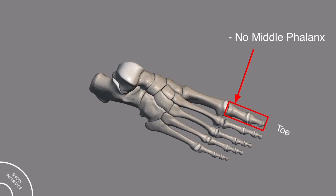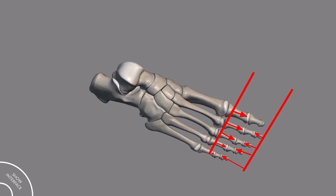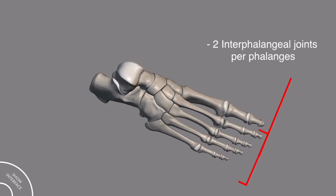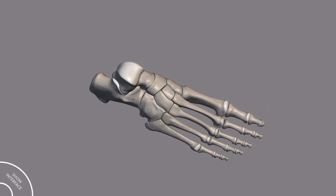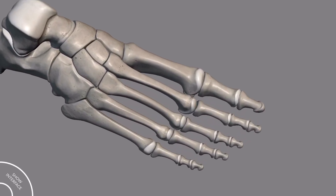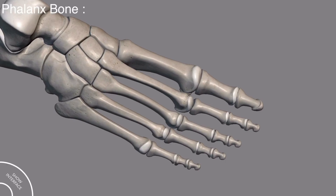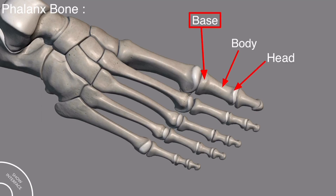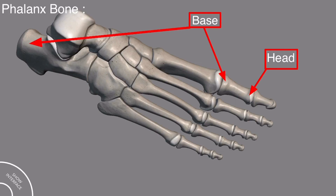The big toe only has two bones. The joint formed between each phalanx bone is called the interphalangeal joint. There are two interphalangeal joints in each phalanges except the first, which has only one. Just like the metatarsal, each phalanx has a base, body, and a head. Do not confuse the base with the head — the base is always closest to the heel bone.